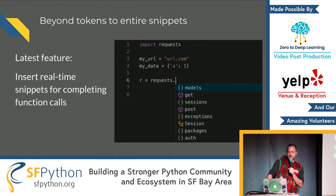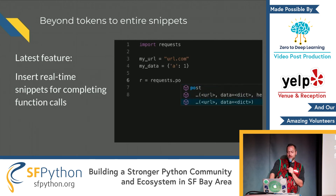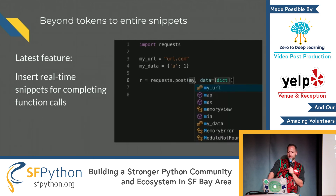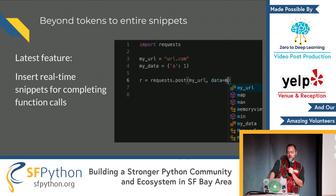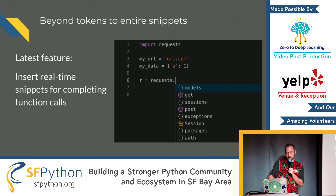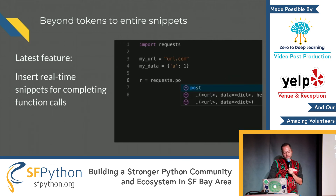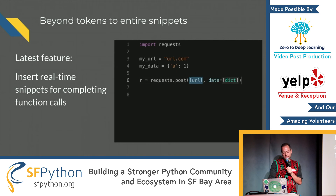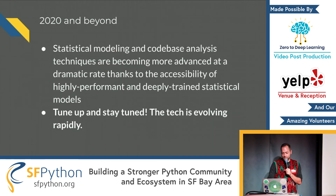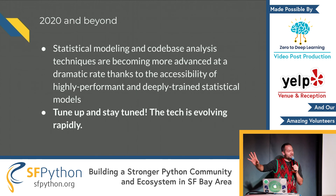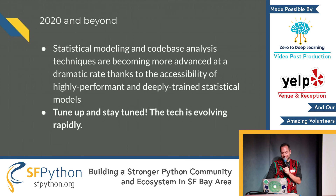This is what an intelligent snippet looks like. It shows the function call — more specifically the arguments you might need to fill in, like for requests.post. So instead of just suggesting the next token, it's giving you an idea for the full completion. Stay tuned and try out these tools — tech is evolving rapidly.